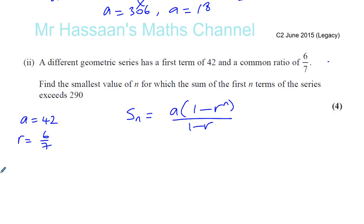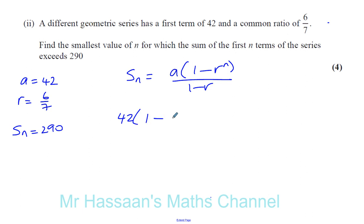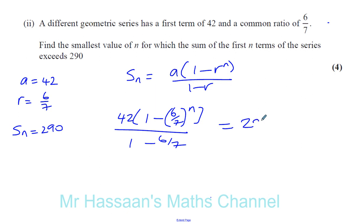So the first term is 42, so A is 42, the common ratio is 6 over 7, and we're going to find the smallest value of N for which the sum exceeds 290. Let's find out when the sum actually equals 290 first. So let's put everything into this formula: 42 times (1 minus 6 over 7 to the power of N) over (1 minus 6 over 7), and we want to know when that's equal to 290.